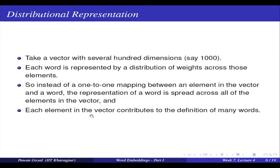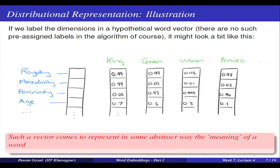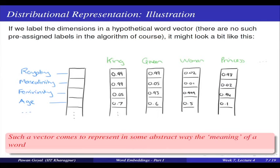Each element in my vector or each dimension might contribute to the definition of multiple words. What the dimensions might indicate — this is just an illustration, not a literal meaning — suppose all the dimensions in my distributed representation can be labeled by some hypothetical labels. My algorithm may not have such labels, and it may not be possible to do that even manually. But for understanding: assume you can assign a label like a topic or concept to each dimension. Here, my dimensions can be like royalty, masculine, feminine, age, and so on.